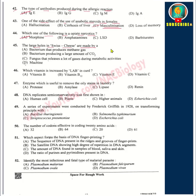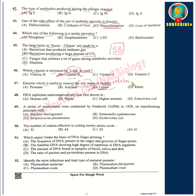The large holes in Swiss cheese are formed because the bacteria produce large amounts of carbon dioxide. Which vitamin is increased by LAB — lactic acid bacteria? It mainly increases vitamin B12. The enzyme useful to remove oil stains in laundry is lipase, which is used in detergents. DNA replicates semi-conservatively, which was first shown in Escherichia coli.